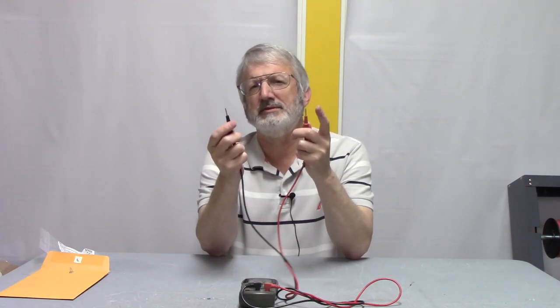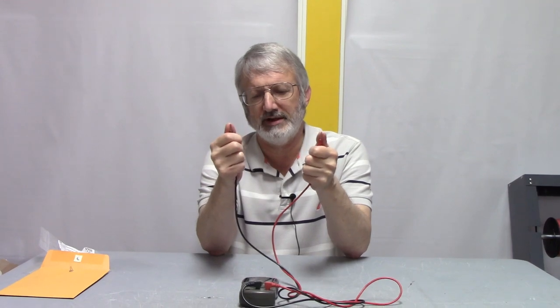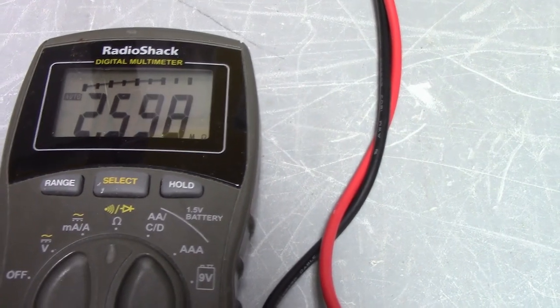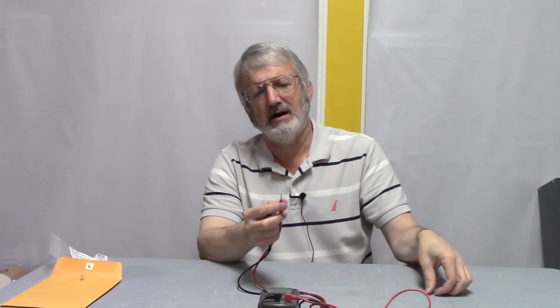Now what I'm going to do is just measure the resistance of my body. I'm going to press both thumbs to both of the probes and see what the meter says. And there we see that the meter says that just my body is about 2.5 mega ohms. So what's happening is I'm getting my body at 2.5 mega ohms in parallel with a resistor of 3 mega ohms.